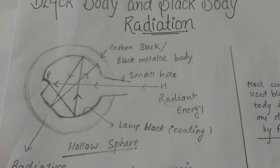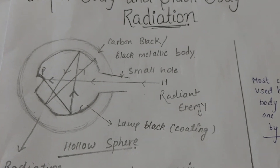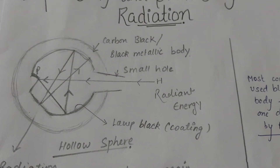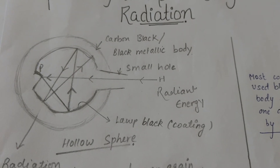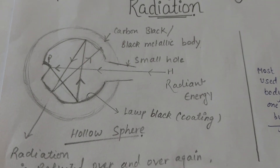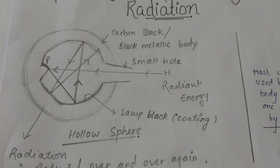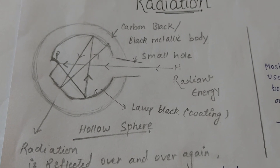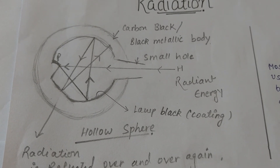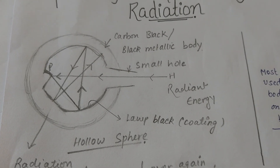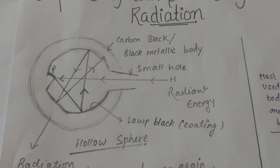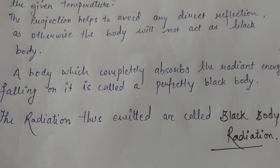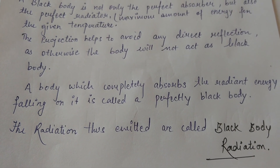We all know that when radiant energy falls on the surface of any body, a part of it is reflected, a part is absorbed, and the rest is transmitted. The most commonly used black body is one designed by Fery. A black body is not only the perfect absorber but also the perfect radiator, because the maximum amount of energy absorbed is re-emitted at the same amount of energy for the given temperature.